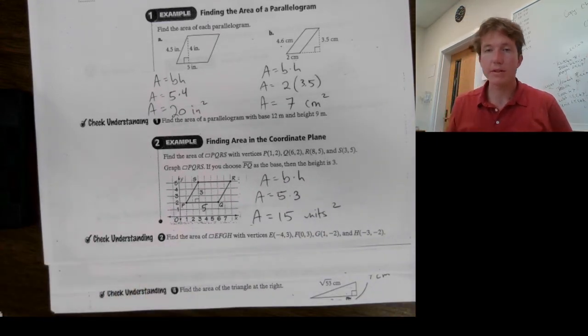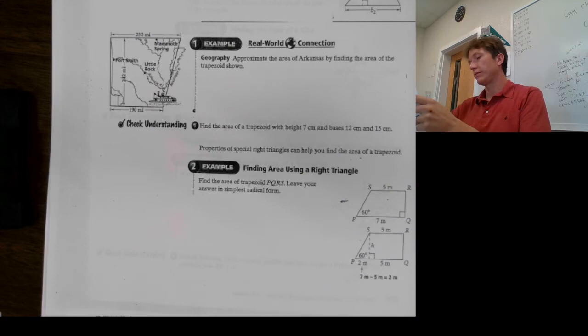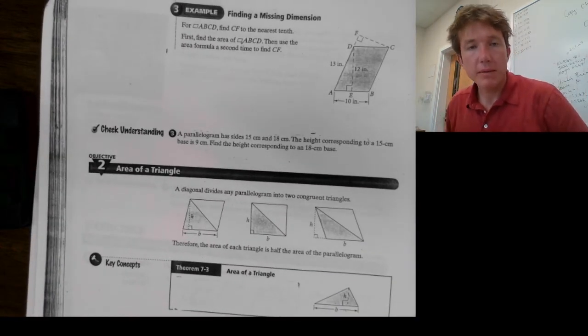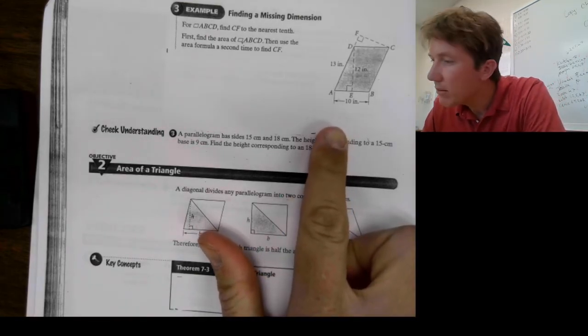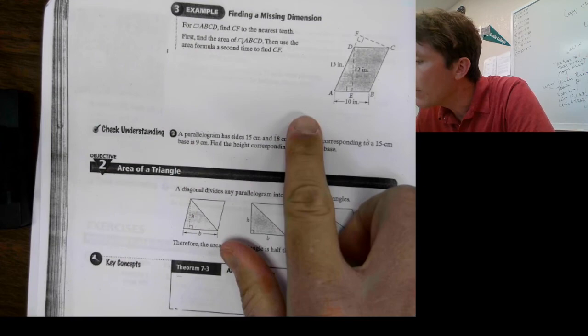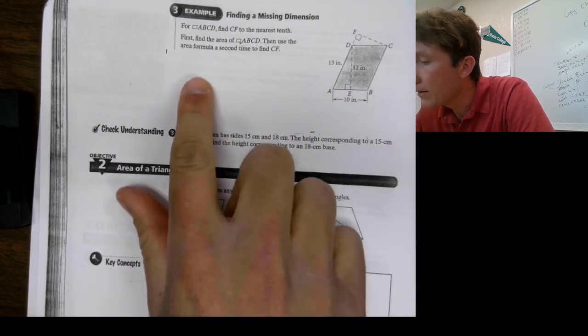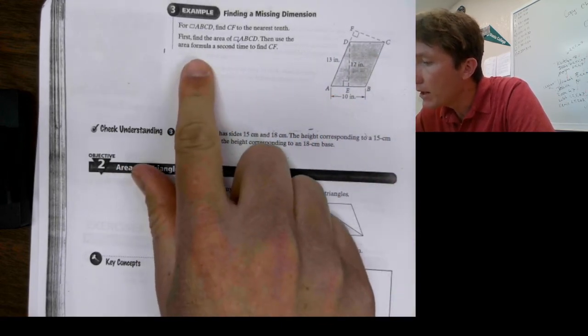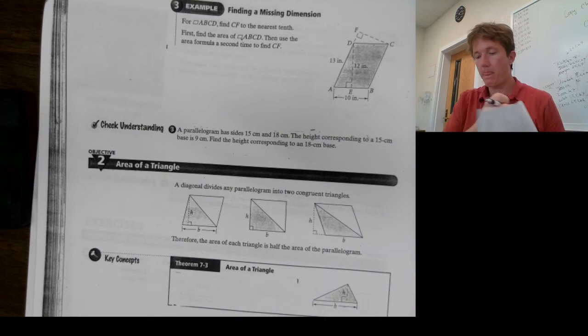Alright. So, there's another check understanding. Let's go ahead and flip the page here. Alright. So, finding the missing dimension. We have a parallelogram here. Looks like you have ABCD, find CF. Where is CF? Oh, it's up here. So, find that to the nearest tenth. So, first we want to find the area of the parallelogram. Then we'll use the area formula a second time to find CF. Alright.